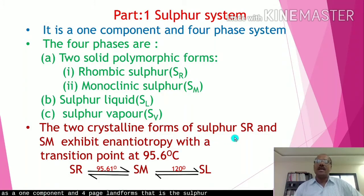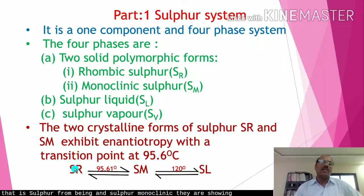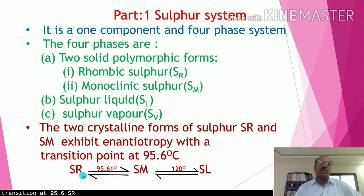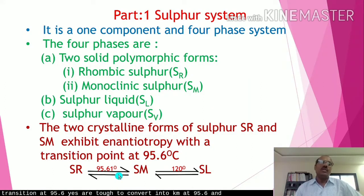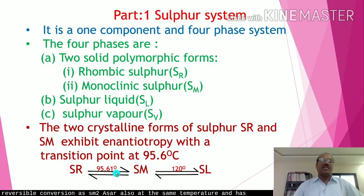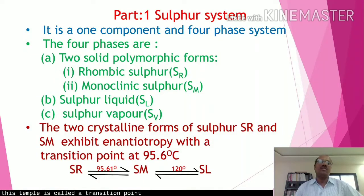The two crystalline forms — sulfur rhombic (SR) and sulfur monoclinic (SM) — show a reversible transition at 95.6 degrees Celsius. Hence 95.6°C is called the transition point of these two enantiomers, SR and SM.